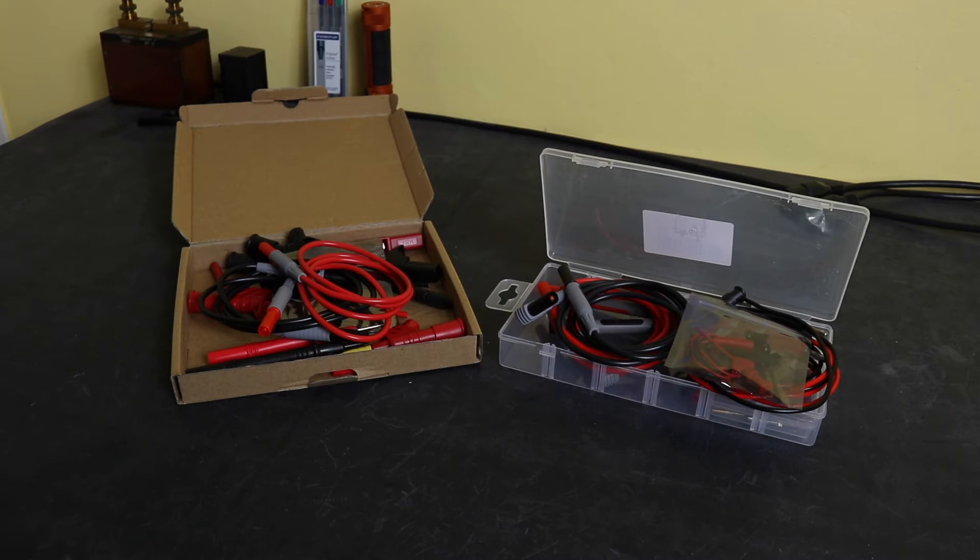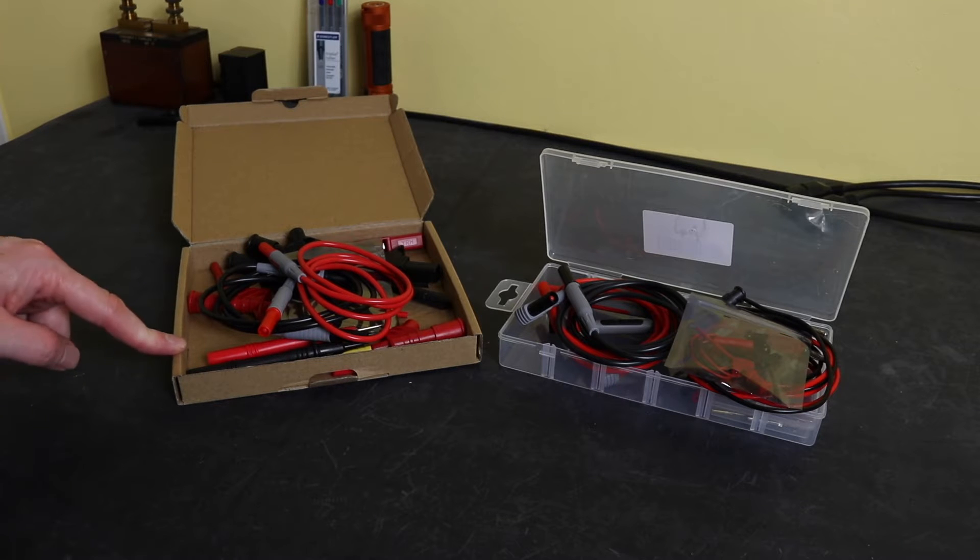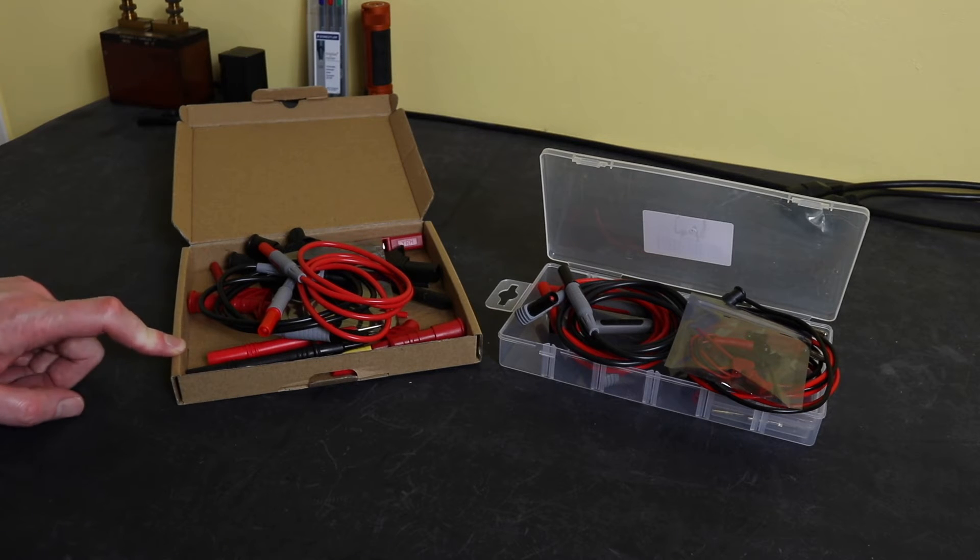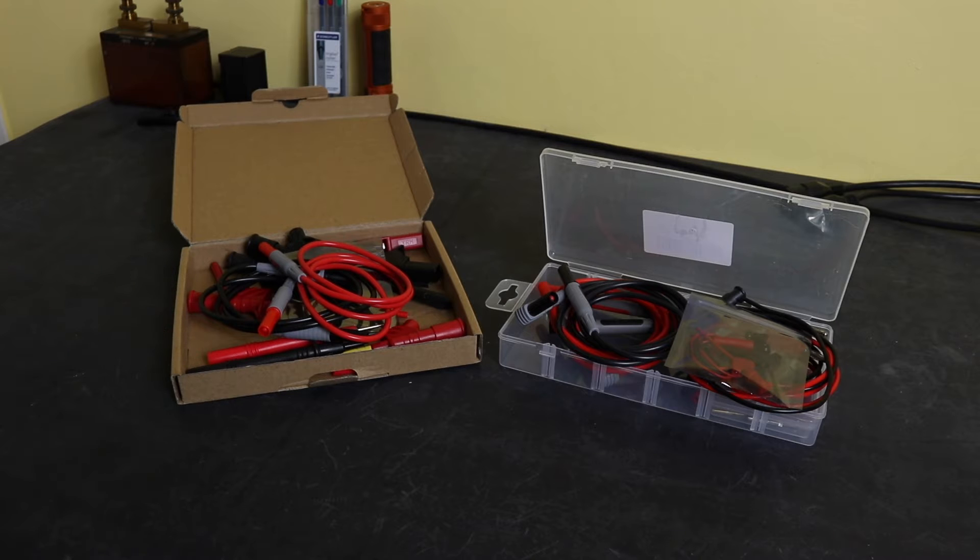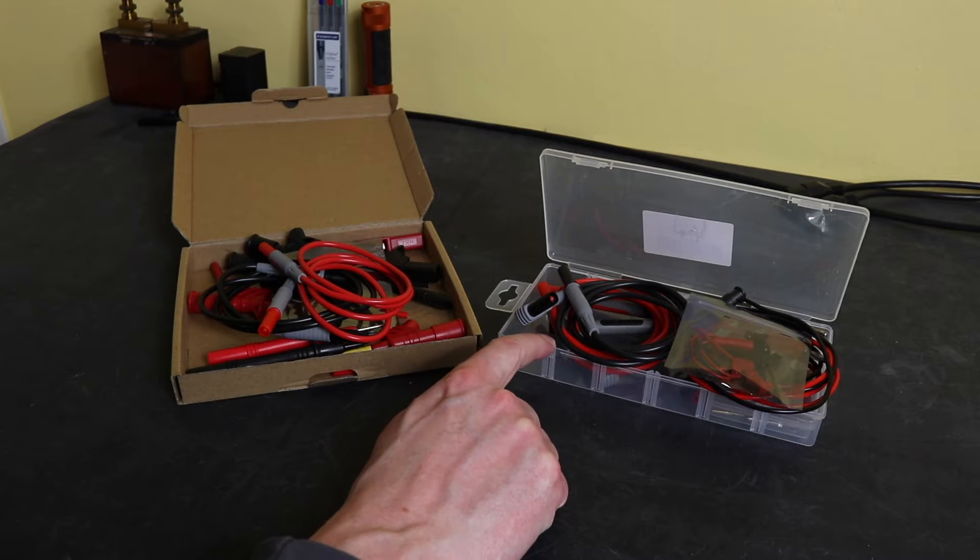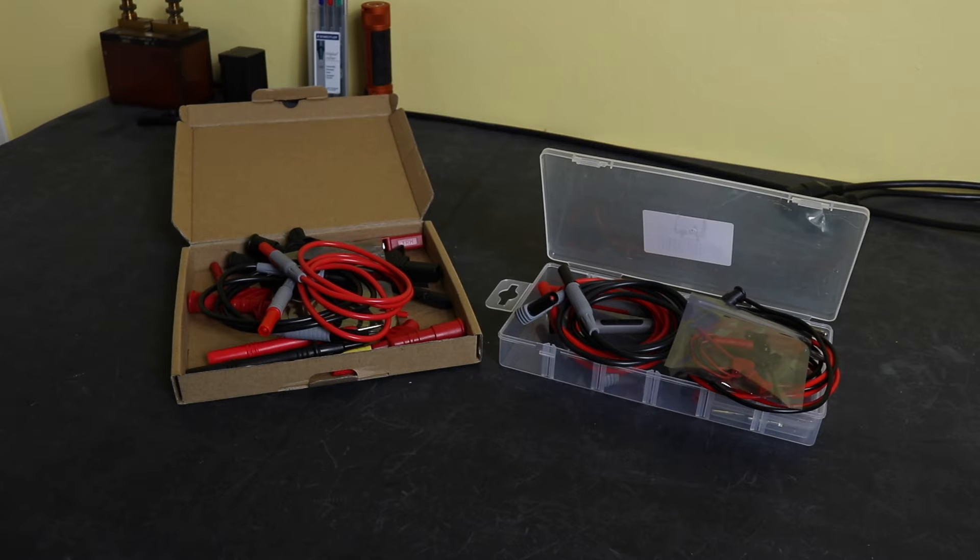Welcome back to the channel, hope everybody is doing well. In today's video we're going to have a comparison of these two test lead sets in front of me. I purchased both from Amazon a little while back. This set here is a 12-piece set manufactured by Prostor and currently retails for £30.99. The set on the right is from Clique, it's a 25-piece set and currently retails for £26.99.